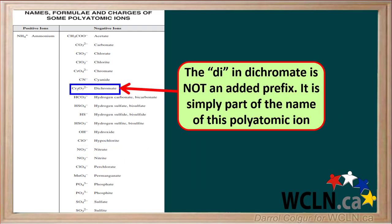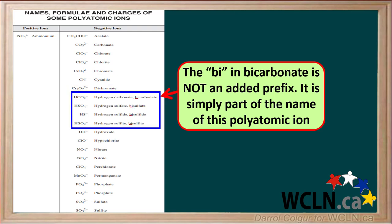Note that the 'di' in dichromate is not an added prefix — it is simply part of the name of that ion. Similarly, the 'bi' in bicarbonate, bisulfate, bisulfide, and bisulfite is not an added prefix; it is simply part of one of the names for these polyatomic ions.